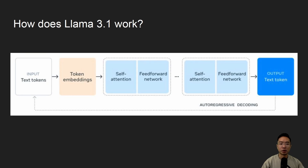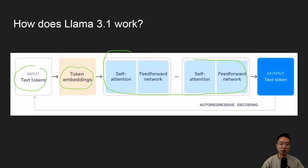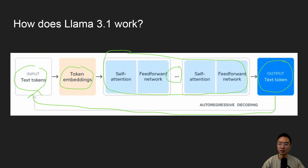So how does Llama 3.1 work? This is the overall architecture diagram showing how inputs and outputs are structured. From the input, you have your text tokens, which is usually your prompt, and that gets embedded. It then gets passed through a series of self-attention and feed-forward network blocks — the dots mean there are more of them. Finally, it outputs the text token, which is the answer to your prompt. Throughout this whole process, there's a feedback loop with auto-regressive decoding that passes back to the input and helps aid the training process.